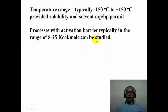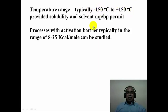The sample tube in the NMR spectrometer can be cooled to minus 150 degrees Celsius or heated to plus 150 degrees Celsius. This 300-degree window is accessible provided the solubility and the solvent melting point and boiling point permits such an operation. It is possible to study processes with activation barriers typically in the range of about 8 to 25 kilocalories per mole using NMR spectroscopy.